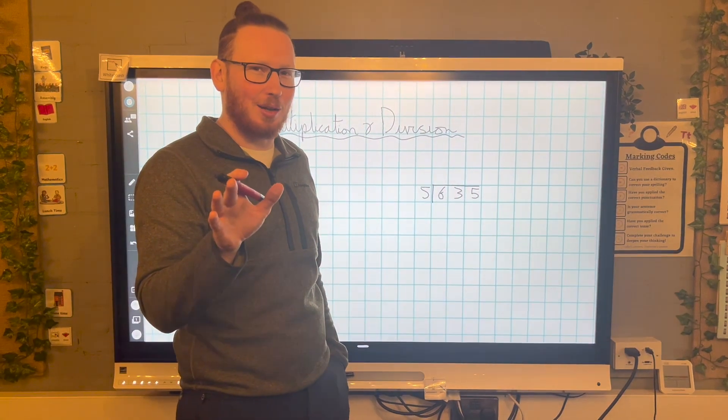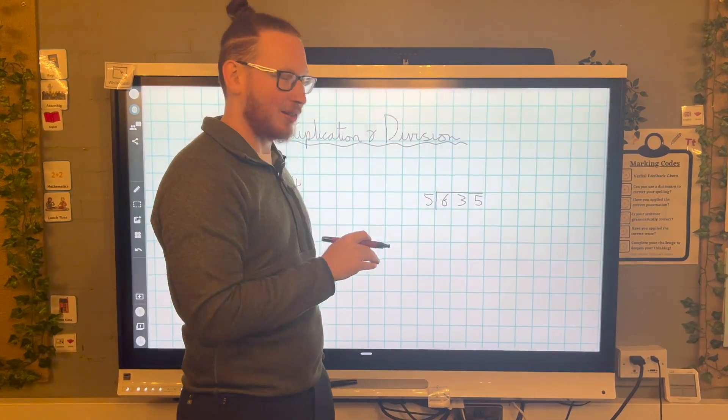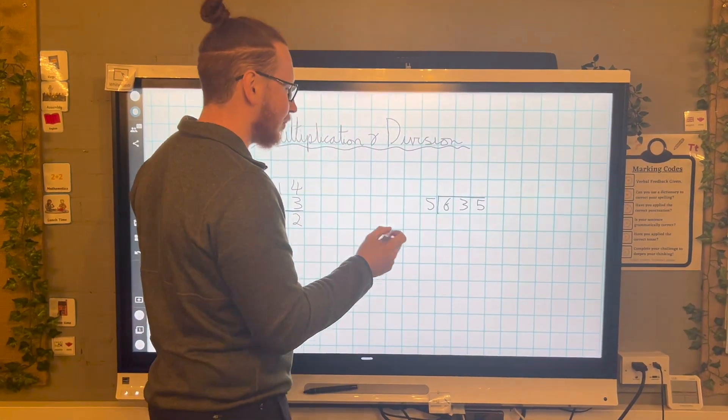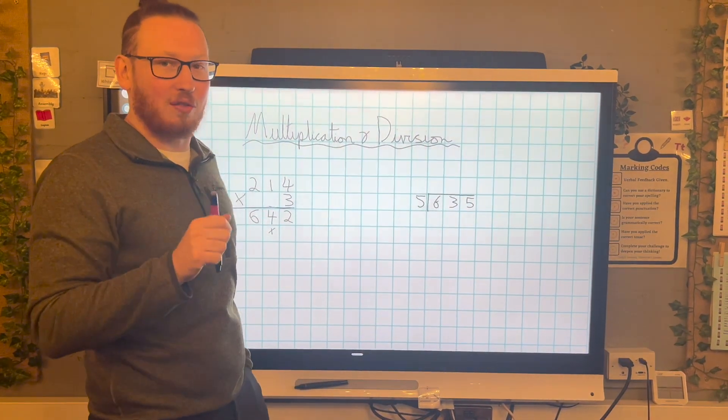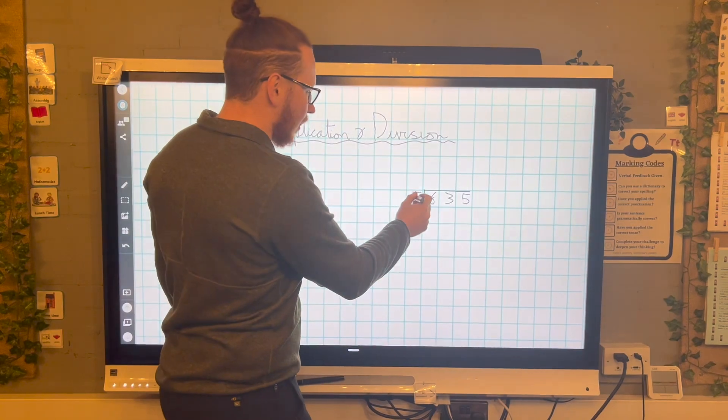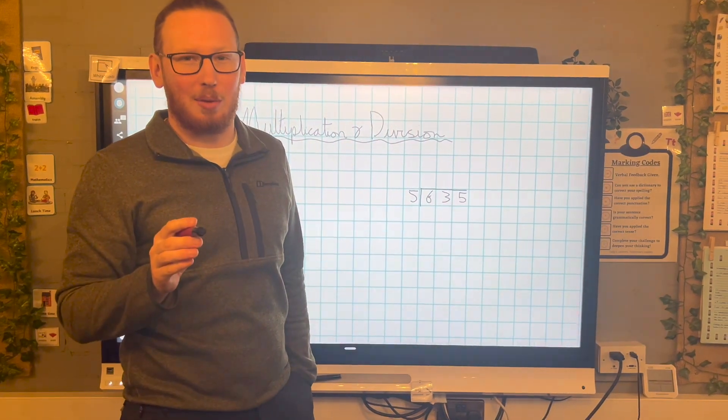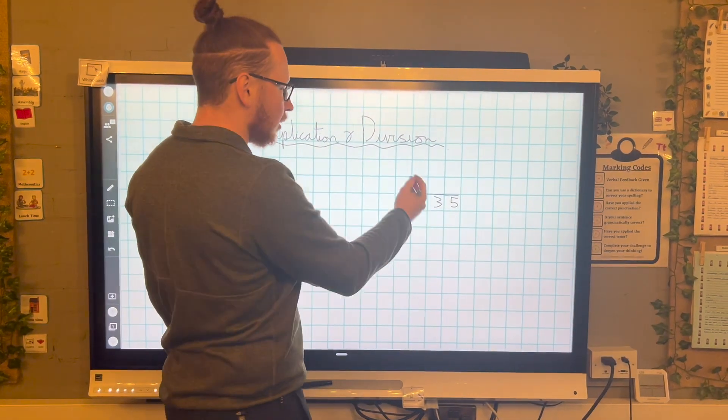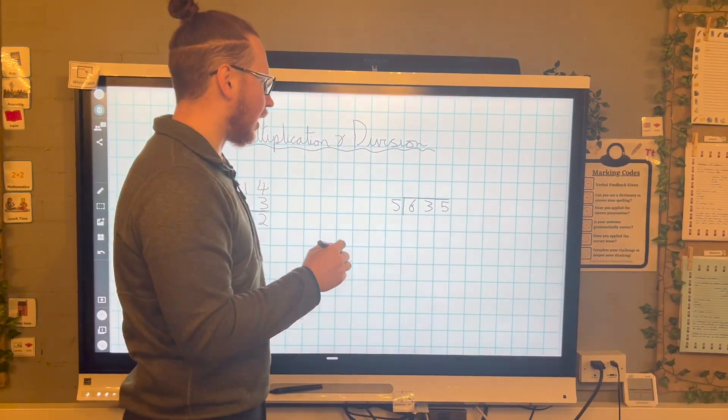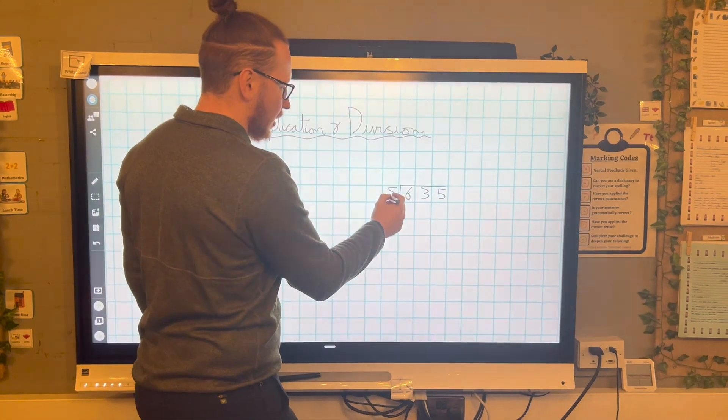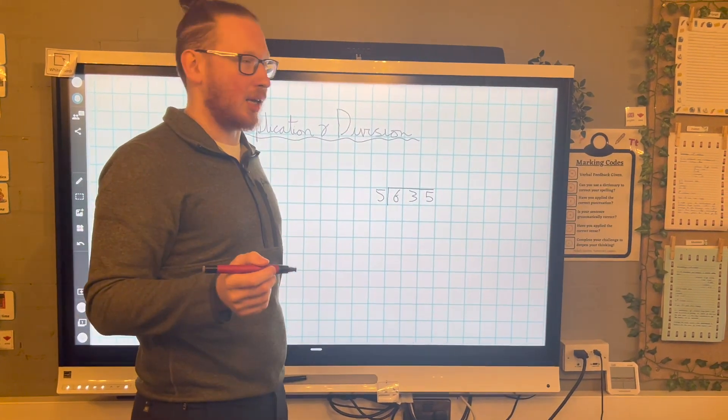We're not getting away from times tables though. We're going to be looking at bus stop methods. So again, we'll be thinking about it. First of all, I'm dividing by five, which means we're going to use our five times table. The question I always ask myself with bus stop method is how many of my divisor goes into the number. So first of all, I'm just going to look at this first digit that appears. So how many fives go into six?